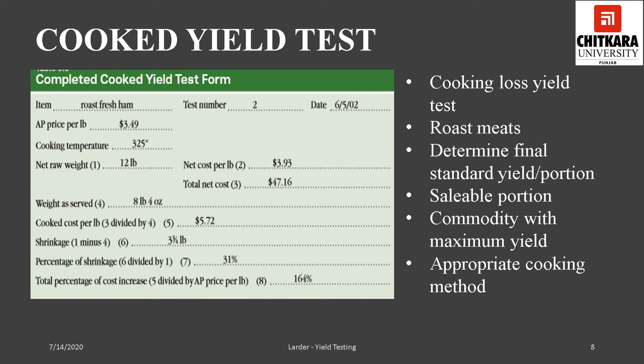The cooked yield test is also known as the cooking loss yield test. No yield testing is complete without determining the weight of the item available for serving, also called the saleable weight. Many items are portioned after cooking, and there is a considerable amount of weight loss during cooking in terms of loss of moisture and fat. Thus, the primary purpose of the cooking loss test is to determine the standard final yield and thereby determine the standard portion size and cost.